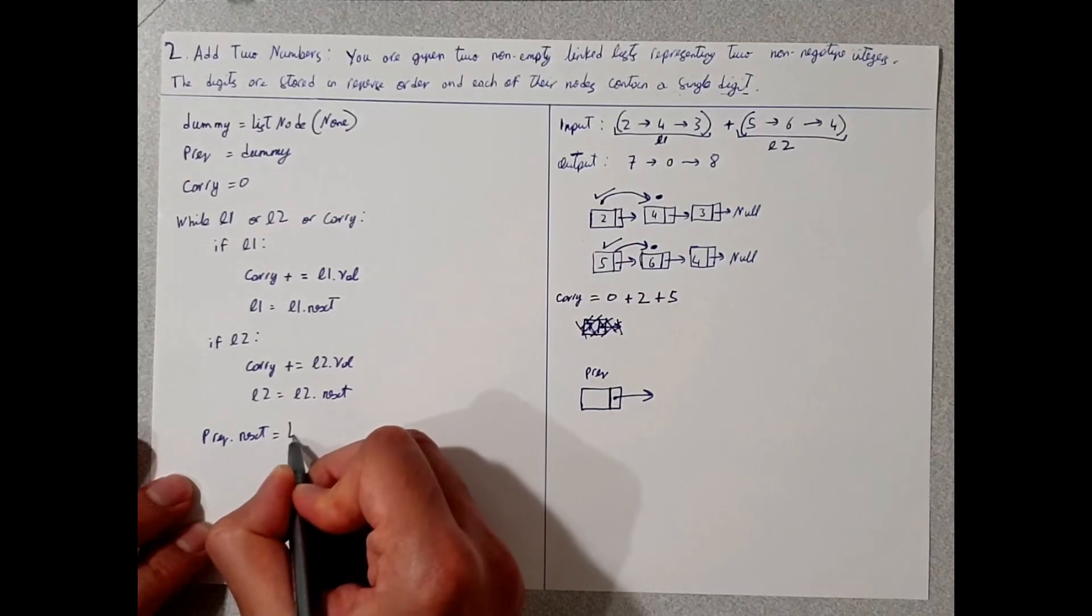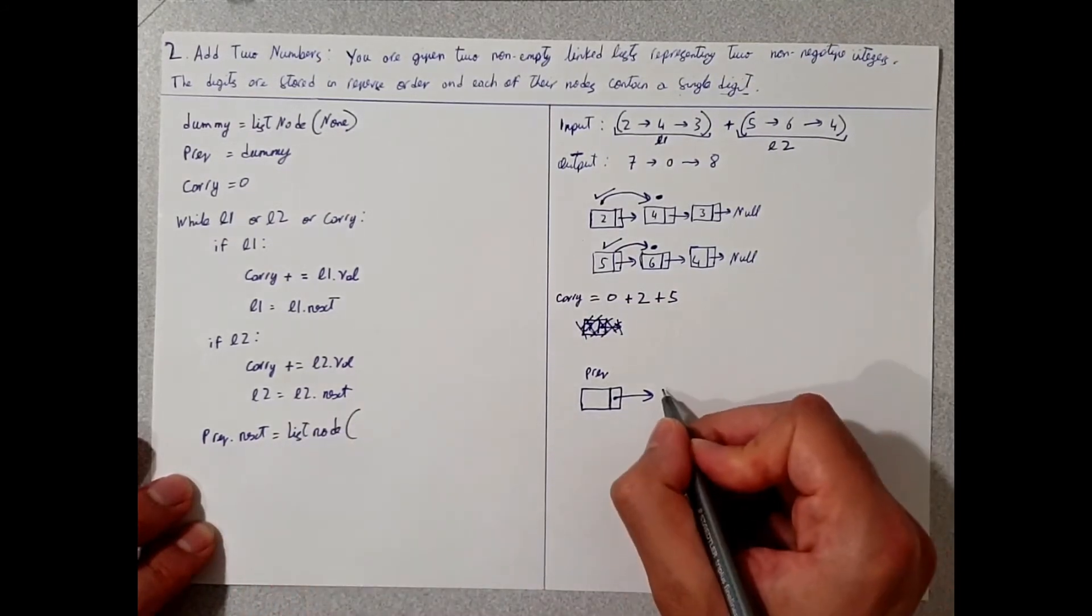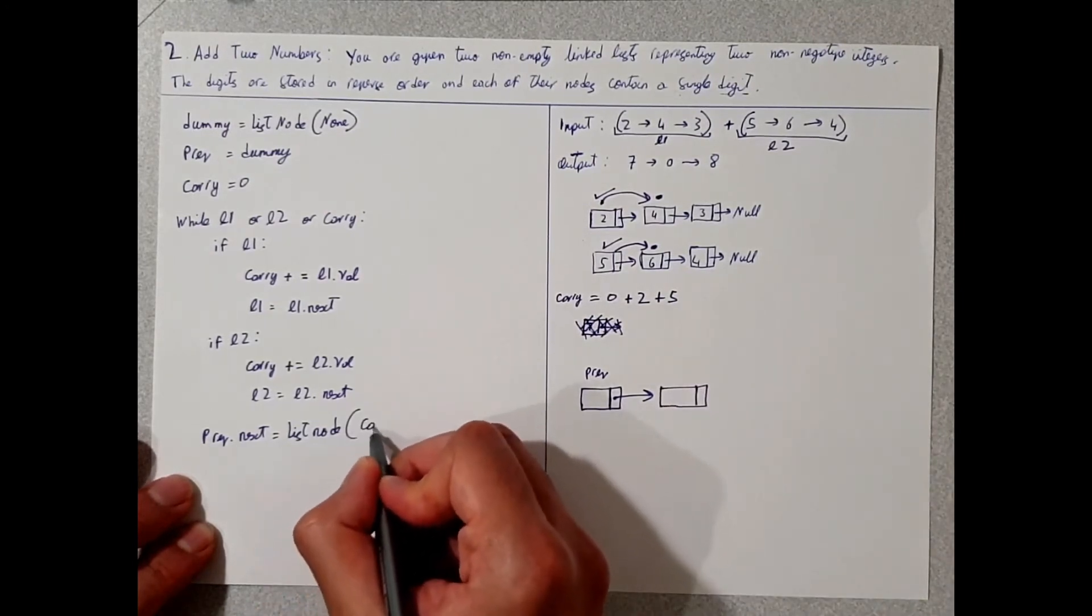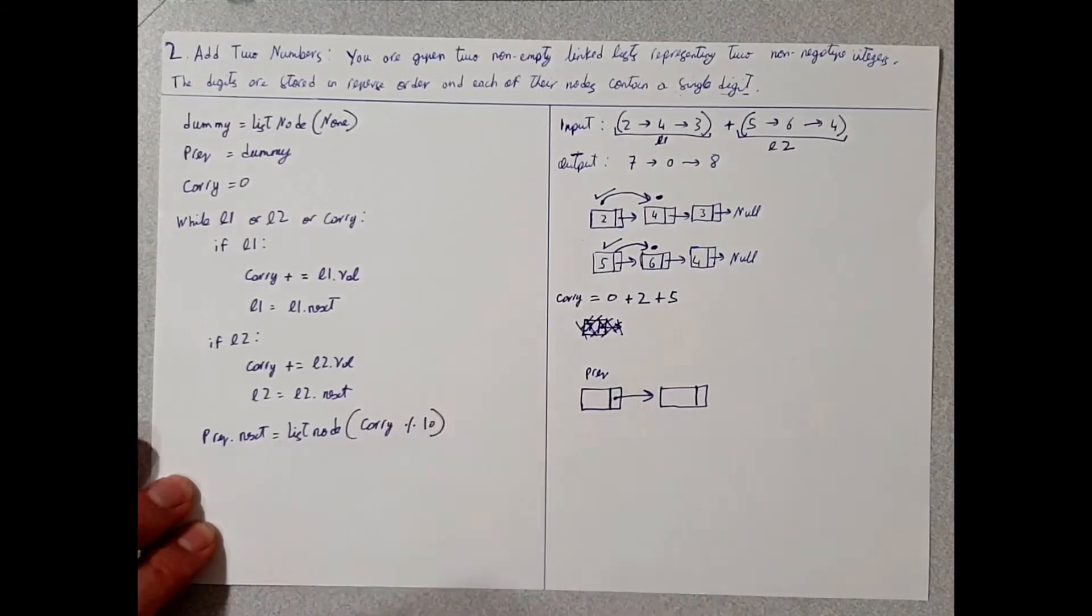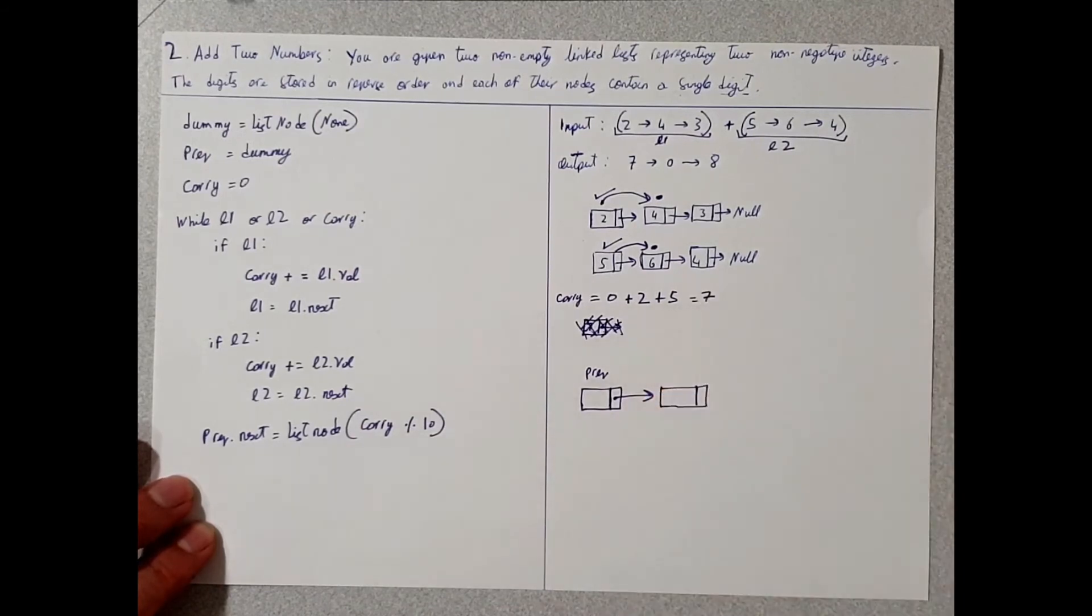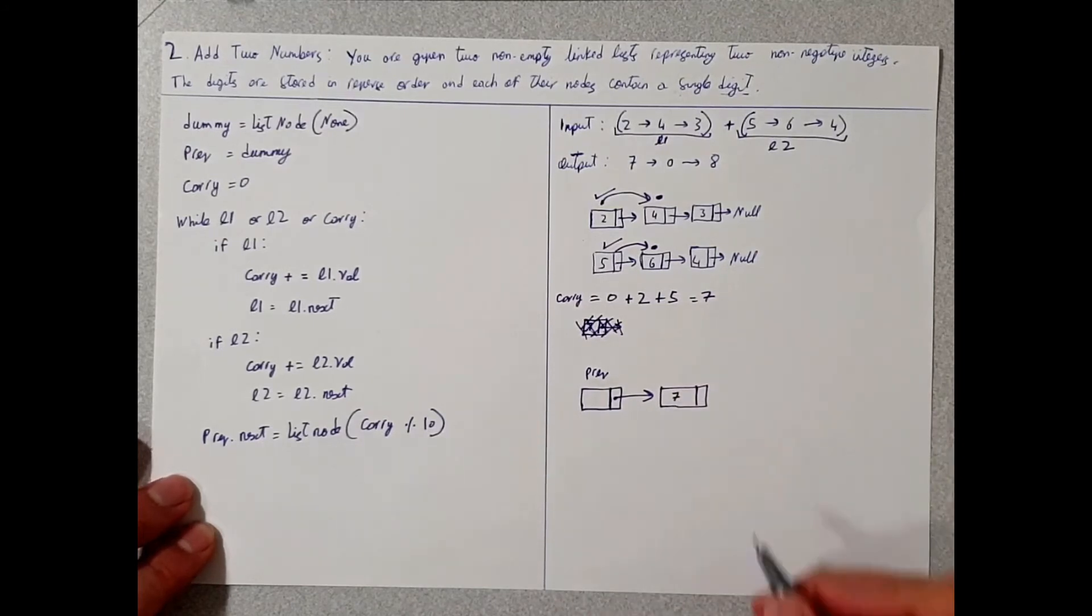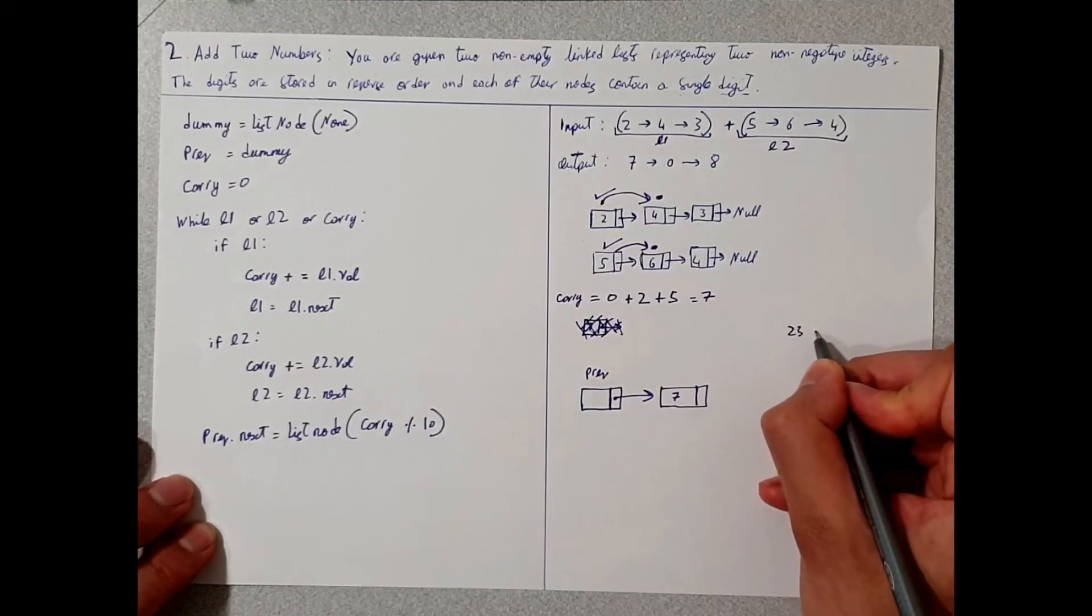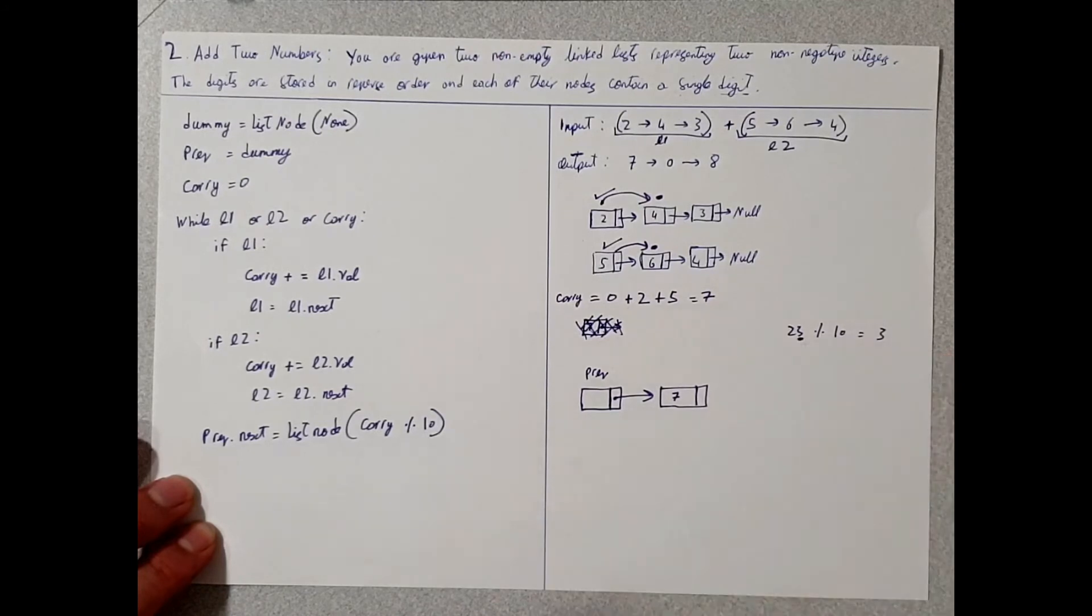right. And in this list node, you're going to do the modulus of 10, and I'll get to that right away. So the value of carry here is seven. The modulus of 10 of seven is just seven. So what does that mean?